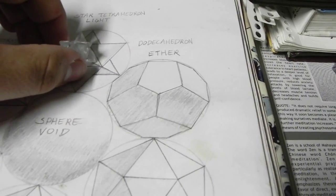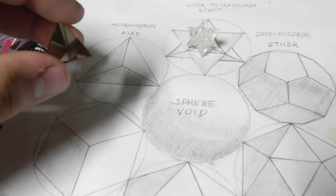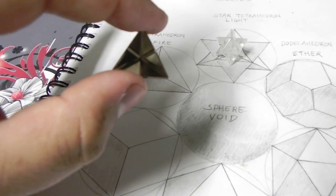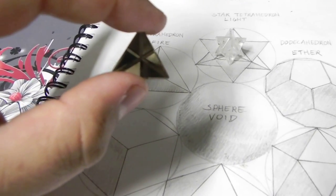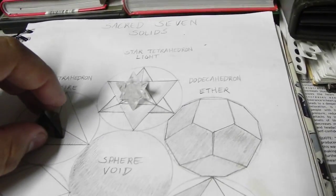And the next one is just the little tetrahedron, which is fire. If you notice, the inside of the tetrahedron forms the perfect six directions. If you look inside of it, you see how it makes that perfect six directional symmetry in there.